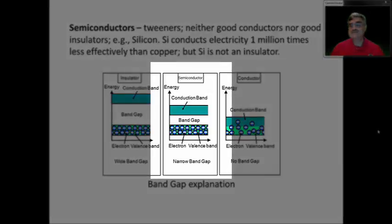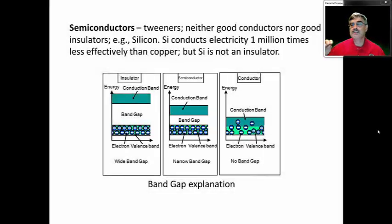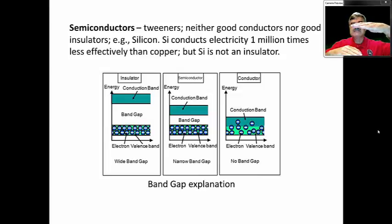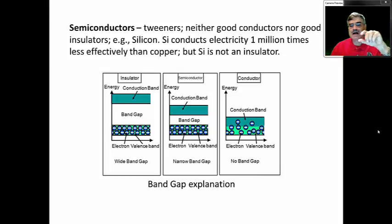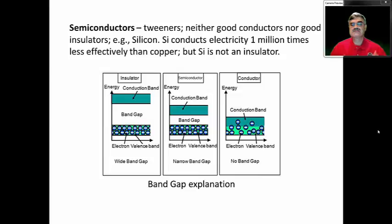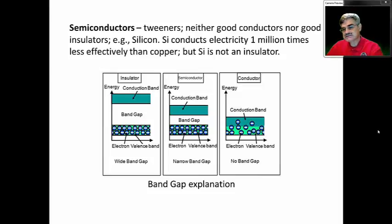A semiconductor is in between. Instead of electrons being completely localized in a valence band or freely swimming in a conduction band, in a semiconductor there is a modest band gap between the valence band and the conduction band. This gap is small enough that electrons can occasionally jump into the conduction band and be conducted, but most of the time they stay in the valence band. So semiconductors can conduct a little, but not nearly as well as a conductor, and they're not perfect insulators either.